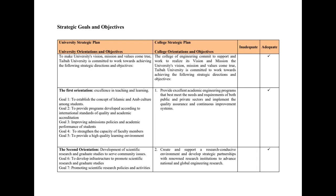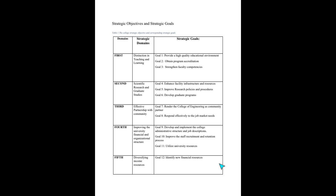Moving on to strategic goals and objectives — sometimes called goals, sometimes strategic goals. There is another file to demonstrate these more clearly. From the beginning, you need to identify domains. For example, this university developed seven domains, which are driven from the attributes extracted from the mission and vision statements.